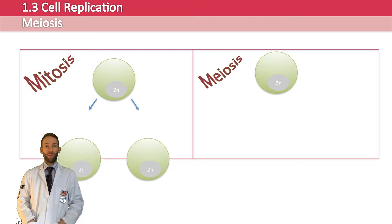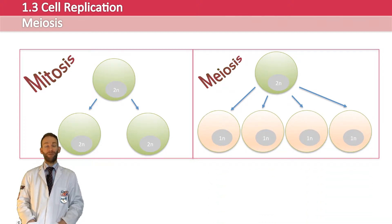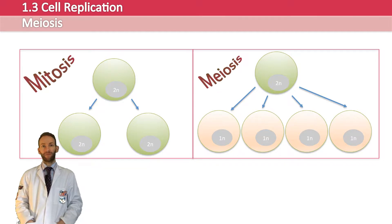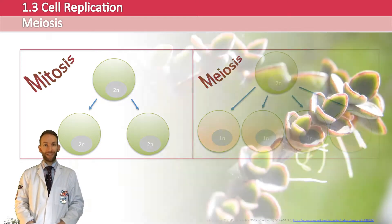In mitosis, you produce two identical copies of that cell, both with 2N — two diploid daughter cells which are identical to the parent cell. But in meiosis we don't produce two cells, we produce four cells. And what we're doing is making haploid cells — they only have one of each pair of chromosomes and therefore they are 1N cells. They are genetically varied, all slightly different, as opposed to mitosis where you're making genetically identical cells. In meiosis we're making genetically varied cells, and we call these cells gametes.